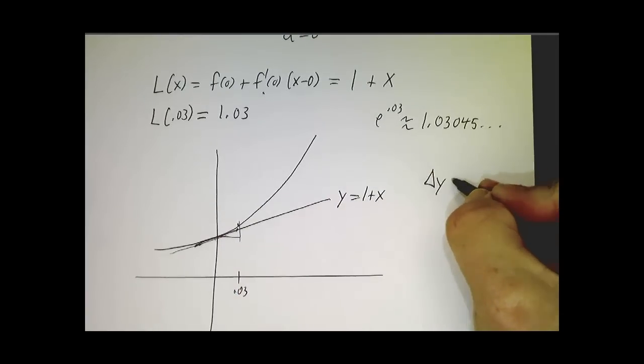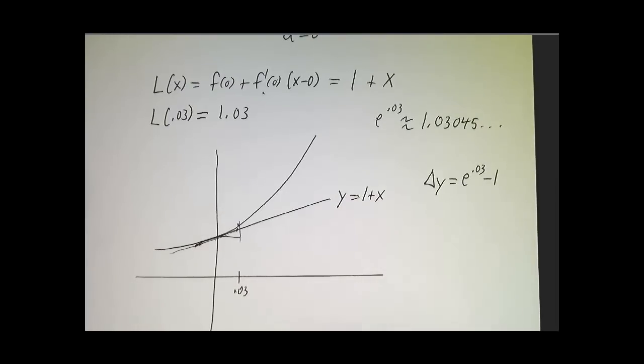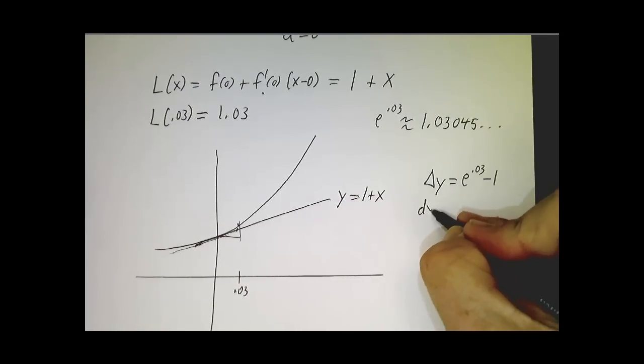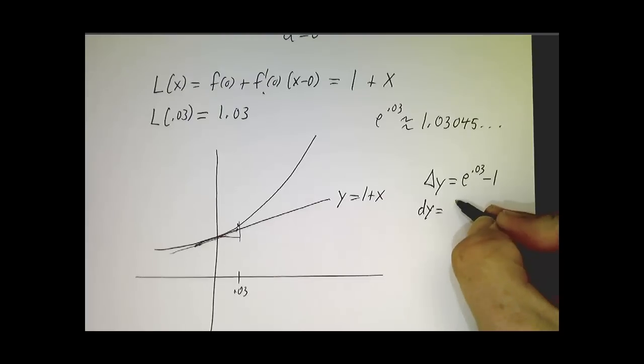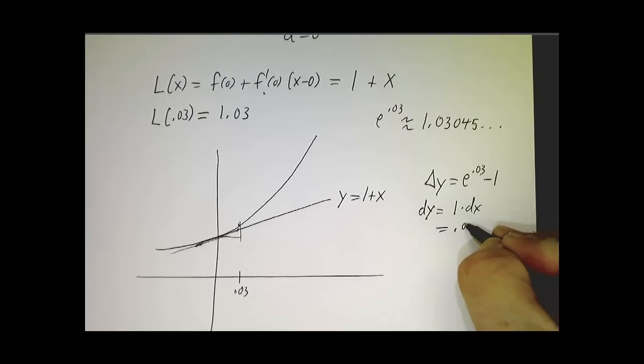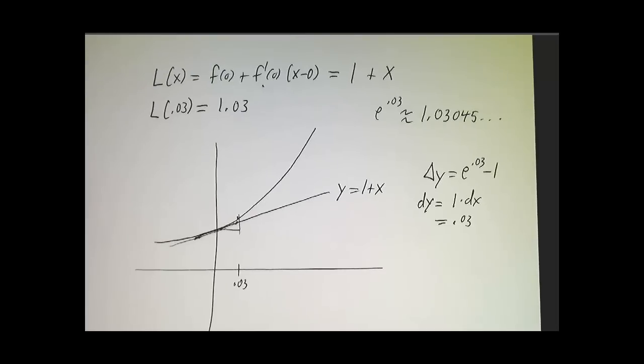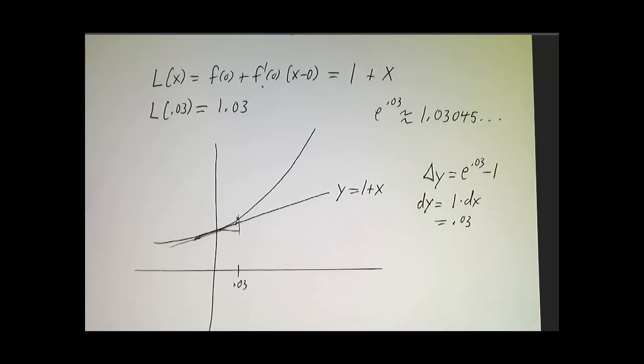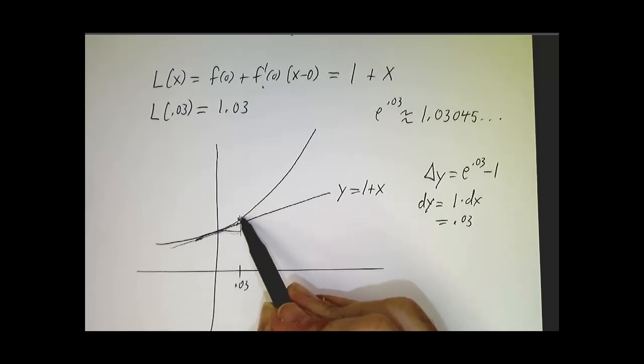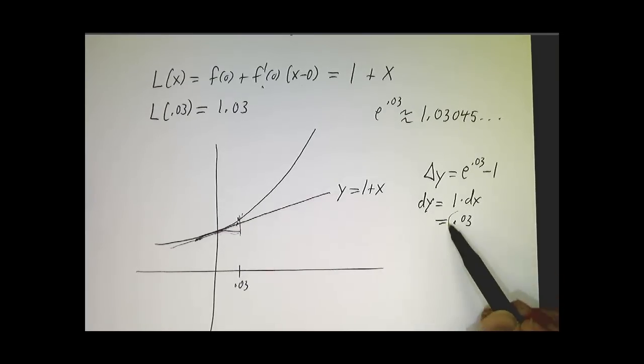The real change in y is e to the 0.03 minus 1. That's what we want to figure out. dy is 1 times dx, which is 0.03. So the approximation says that the change in the value of our function is approximately 0.03.